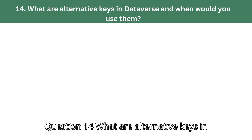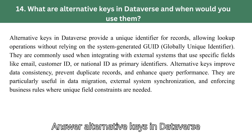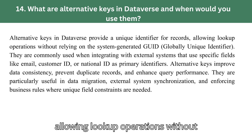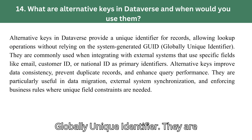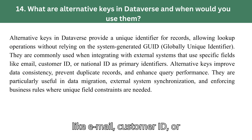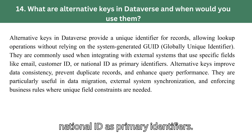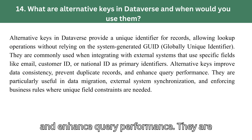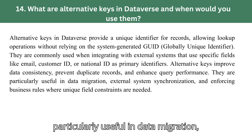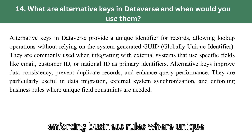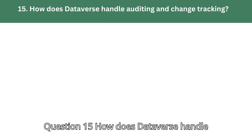Question 14: What are alternative keys in Dataverse, and when would you use them? Answer: Alternative keys in Dataverse provide a unique identifier for records, allowing lookup operations without relying on the system-generated GUID (globally unique identifier). They are commonly used when integrating with external systems that use specific fields like email, customer ID, or national ID as primary identifiers. Alternative keys improve data consistency, prevent duplicate records, and enhance query performance. They are particularly useful in data migration, external system synchronization, and enforcing business rules where unique field constraints are needed.